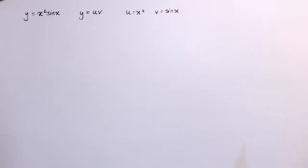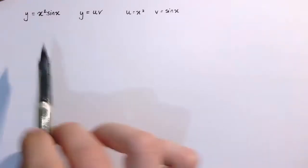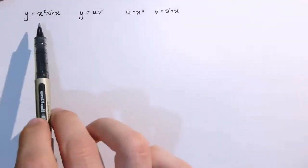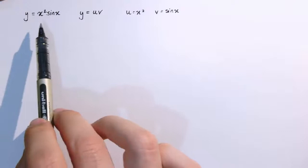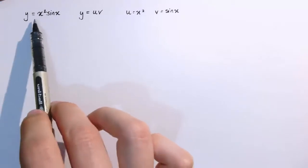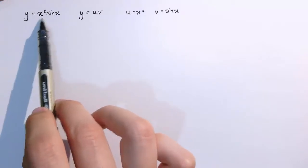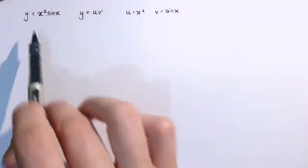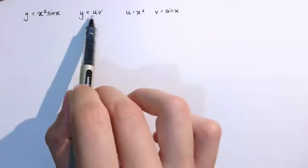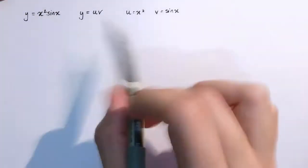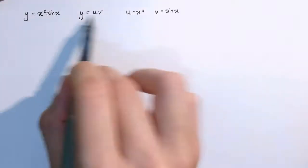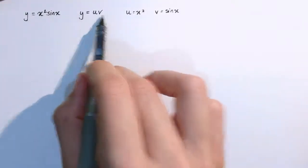In this video I'm going to prove the product rule. We use the product rule when we're trying to differentiate an expression like y equals x squared times sin x — essentially the product or multiplication of two different functions. I'm going to call those functions u and v, so here u is x squared and v is sin x, and this overall function is u times v.